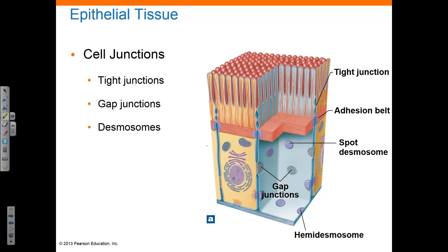The cells of the epithelial tissues are closely bound, both to each other and to the basement membrane, which aids in the protection they provide. Cell junctions are specialized means of attachment and include tight junctions, gap junctions, and desmosomes. In tight junctions, membrane proteins link the plasma membrane from two cells together and prevent diffusion between the cells. An adhesion belt below the tight junctions also helps keep cells attached to their neighbors. Gap junctions utilize connexons, membrane proteins, to link cells, and diffusion of small molecules is allowed by these gap junctions. Desmosomes hold two adjacent cells together through transmembrane proteins known as cell adhesion molecules, or CAMs, as well as proteoglycans.